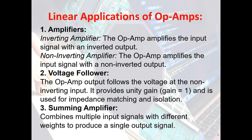For the linear applications of op-amps, we have amplifiers, and there are two types: the inverting amplifier and the non-inverting amplifier. For the inverting amplifier, the op-amp amplifies the input signal with an inverted output. On the other hand, for the non-inverting amplifier, the op-amp amplifies the input signal with a non-inverted output.